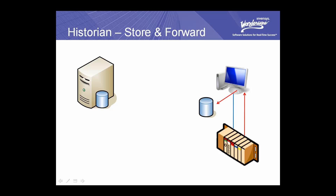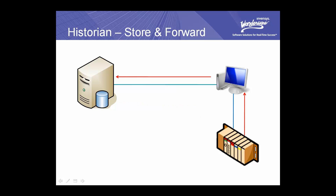But what happens to the data if the remote node can't communicate with the Historian? With Wonderware's Historian, it's cached locally on that remote node until the Historian is available again. When the connection is reestablished, live data as well as the cached data are sent to the Historian for storage. If the server happens to be busy and can't accept the cache data right away, the remote nodes will try, wait a while, and try again until all that data is pushed through. Once it's been forwarded, the local cache is removed. This powerful data logging architecture, which ensures data is not lost, is what we call store and forward.